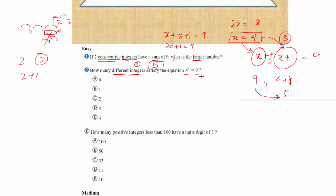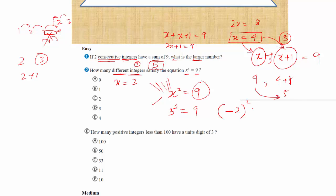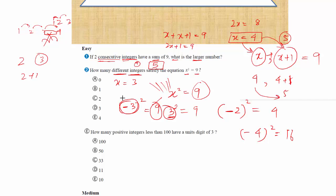Second question: how many different integers satisfy X squared equals nine? We know three squared is nine, so X equals three is one solution. But any negative number squared is positive — negative three squared is also nine. So we have two numbers: three and negative three. There are two different integers whose square gives nine, so the answer is option C.